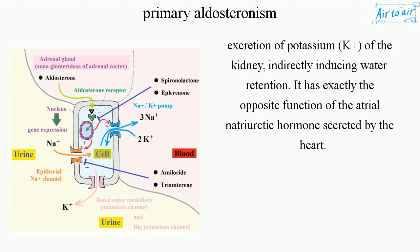Aldosterone indirectly induces water retention in the kidney. It has exactly the opposite function of the atrial natriuretic hormone secreted by the heart.